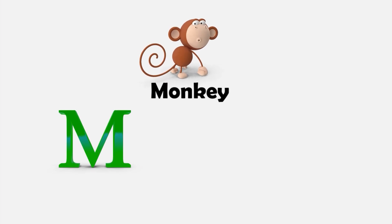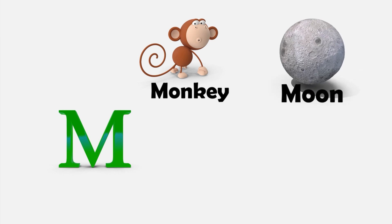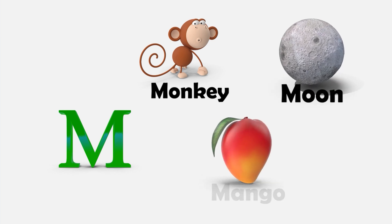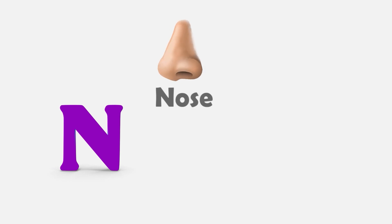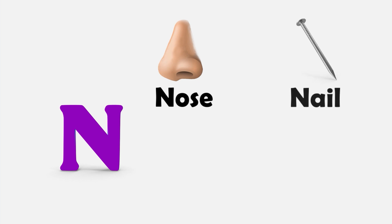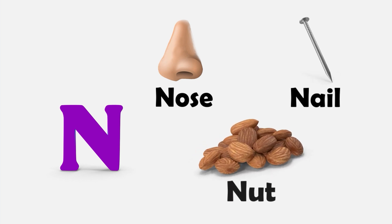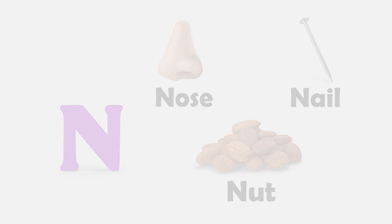M — M is for Monkey. M is for Moon. And M is for Mango. N — N is for Nose. N is for Nail. And N is for Nuts.